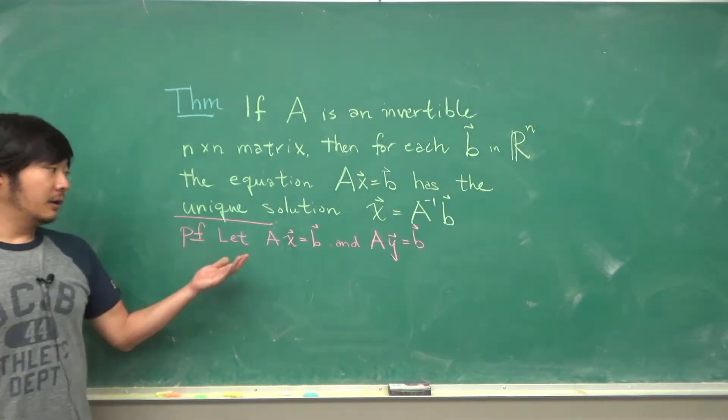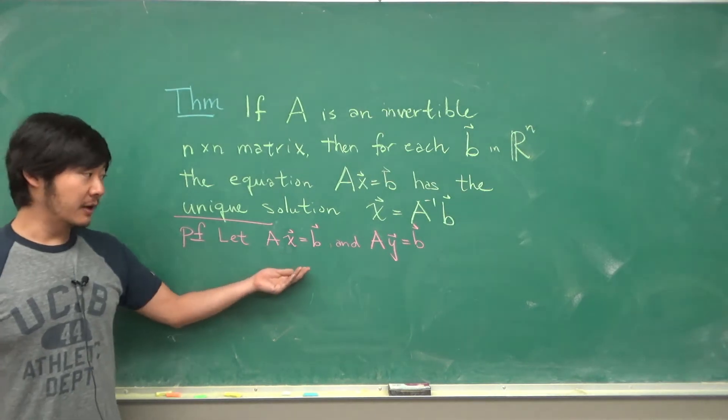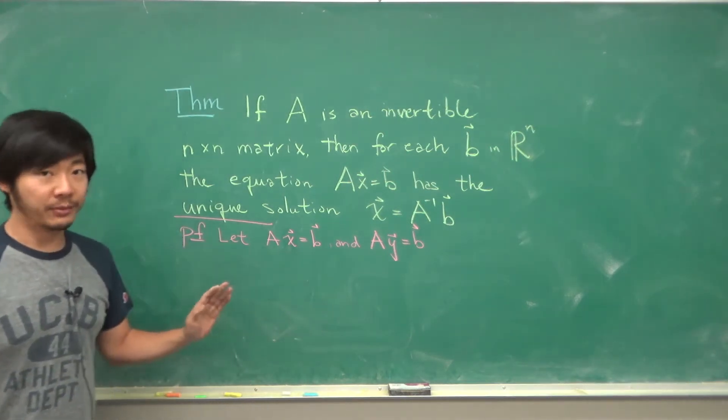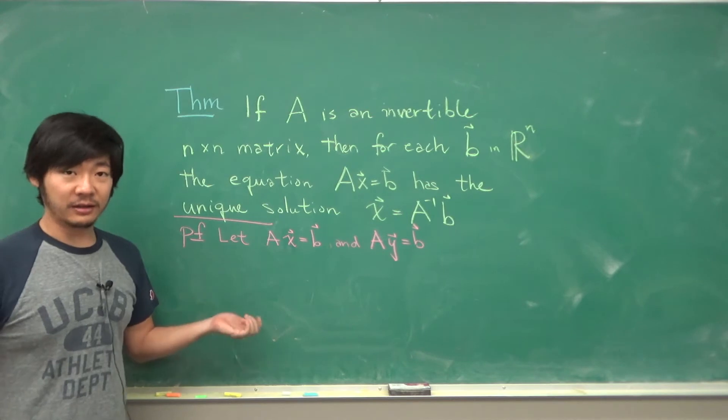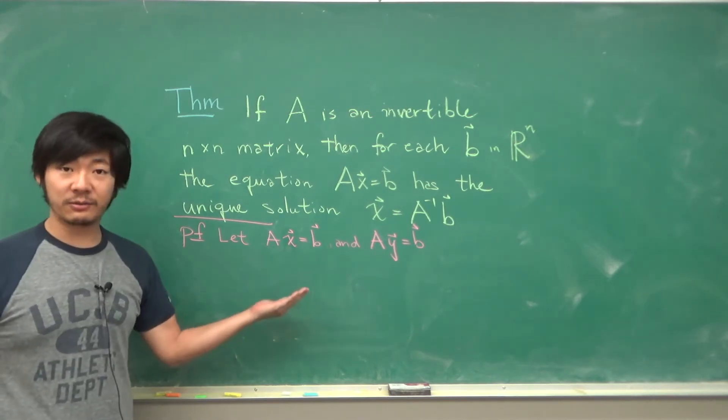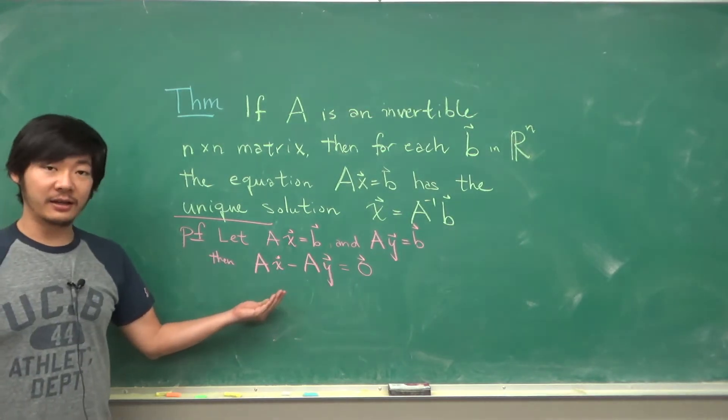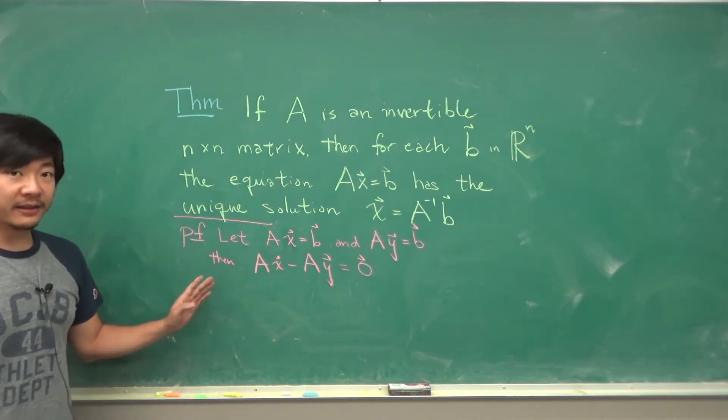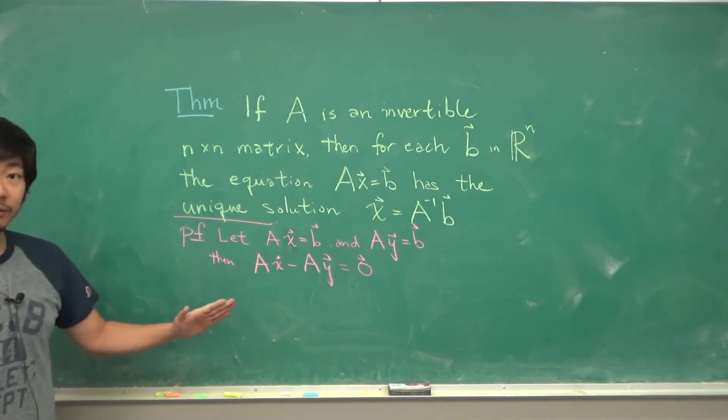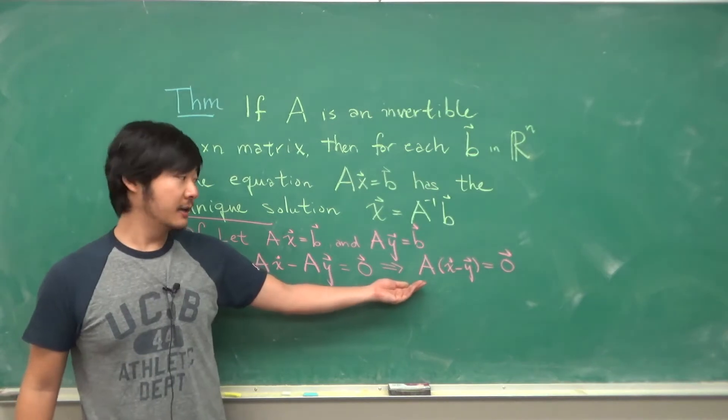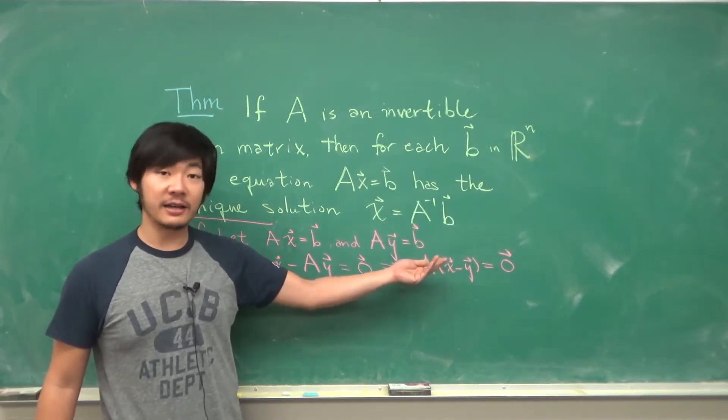So let's prove this. Let AX equal B and also AY equals B. So potentially two different solutions, but are they really different? Well let's subtract these from each other. AX minus AY is 0, but using the fact that this is linear we can rewrite this as A times X minus Y is equal to 0.